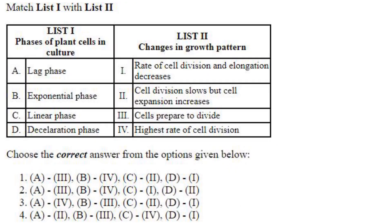Phases of plant cells in culture and changes in the growth pattern. Lag phase: cells prepare to divide, A3. Exponential phase: highest rate of cell division, B4. Linear phase: cell division slows but cell expansion increases, C2. Deceleration phase: rate of cell division and elongation decreases, D1. Answer is option 1: A3, B4, C2 and D1.